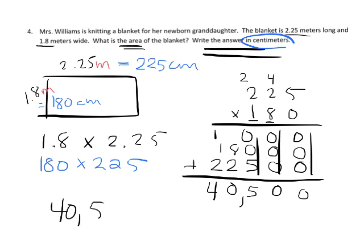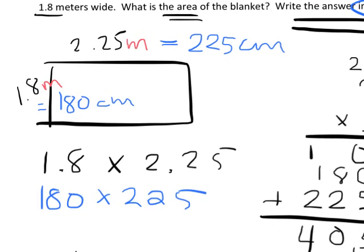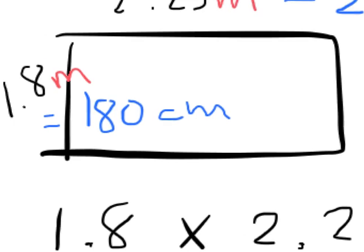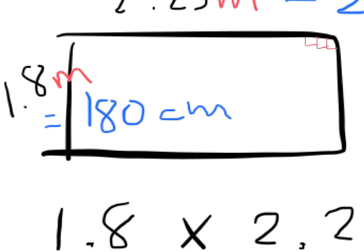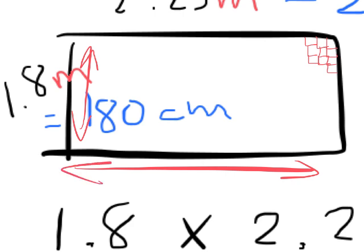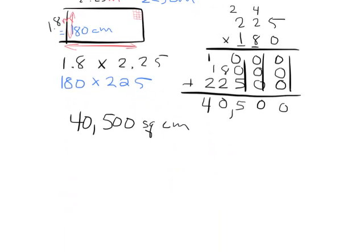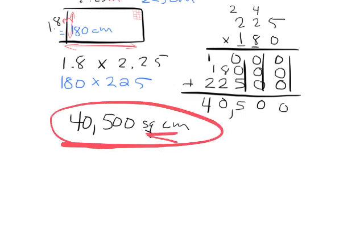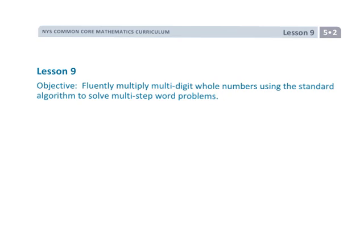Our answer is 40,500 square centimeters. If we imagine this rectangle, there would be 40,500 tiny little square centimeters — 180 going one way and 225 going the other way. So we leave the answer as 40,500 square centimeters. That is Lesson 9, where we use the standard algorithm to multiply in order to find solutions to word problems. Thank you.